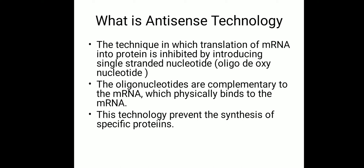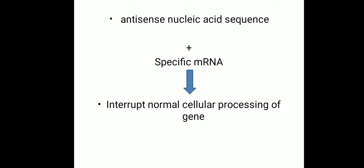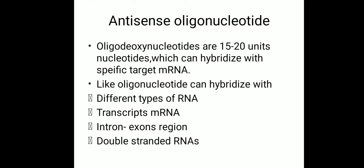This antisense nucleic acid can be considered a drug that binds to a specific mRNA, inhibiting the activity of that mRNA so that protein cannot be synthesized because the mRNA is not working in the cell. The antisense oligonucleotide is approximately 15 to 20 nucleotide units in size, and it can hybridize with a specific target mRNA, binding on to that specific mRNA.